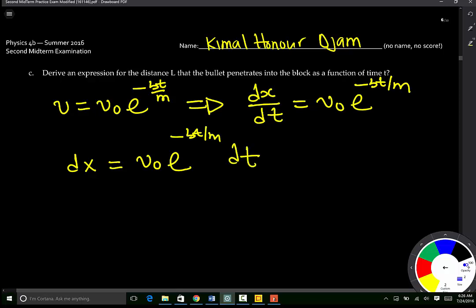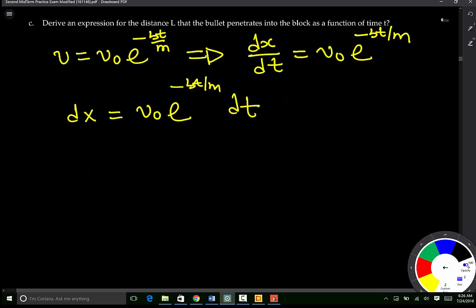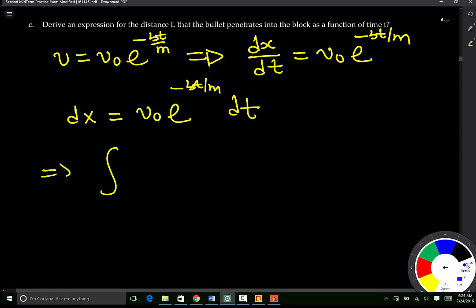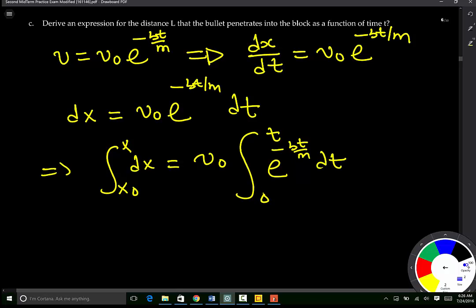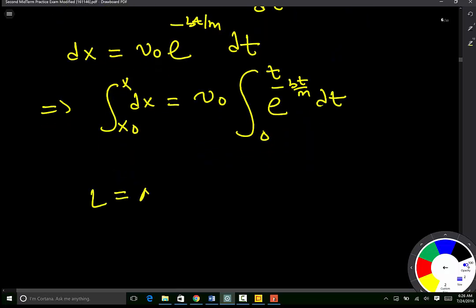We can integrate, which basically means the integral from x0 to x of dx is equal to the integral from 0 to t of v0 e negative Bt over M dt. In other words, L, which is going to be equal to delta X, will be equal to v0 times the integral of e negative Bt over M from 0 to t.